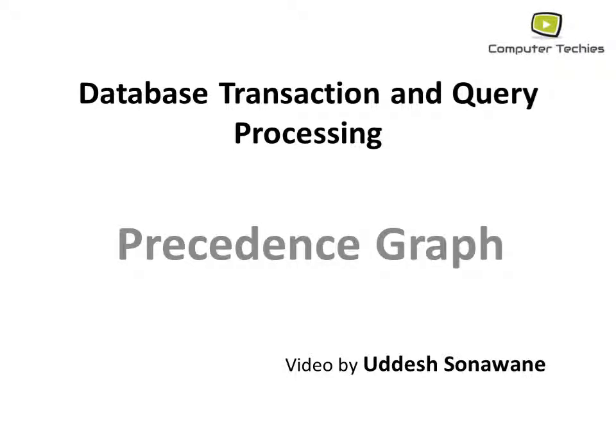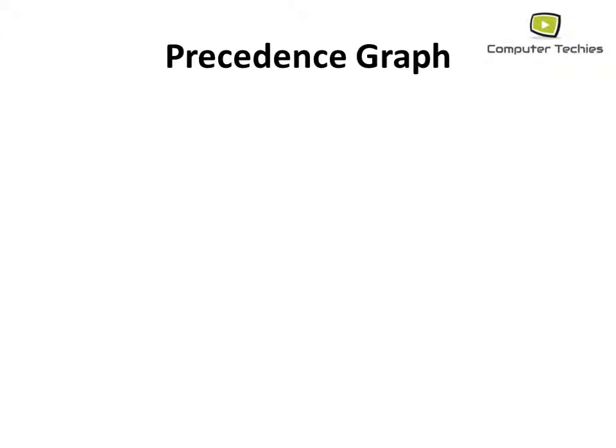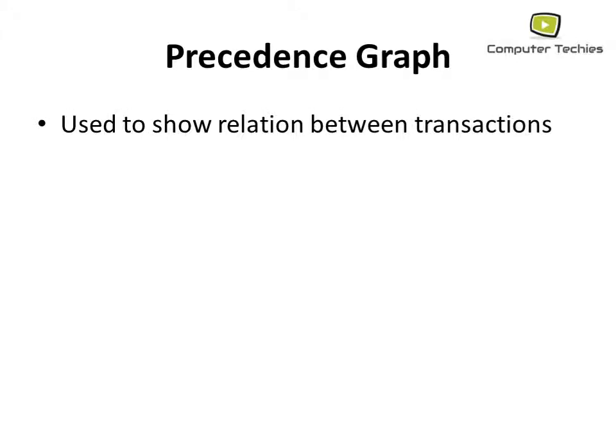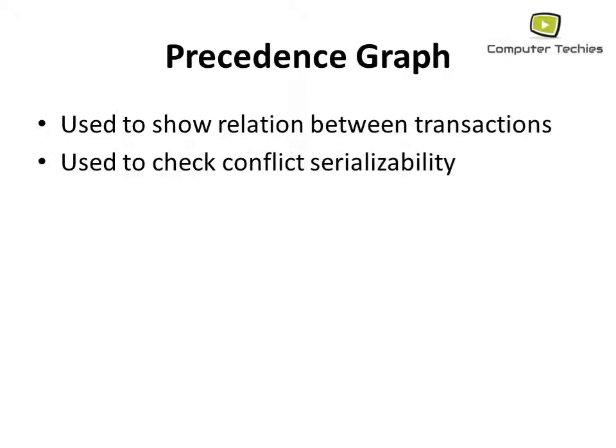Hello friends, today we will discuss the precedence graph, which is one of the most important concepts used in database transaction and query processing. The precedence graph is used to show the relation between transactions and is used to check the conflict serializability.